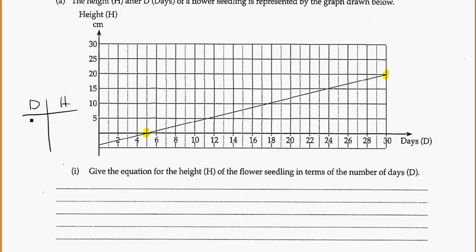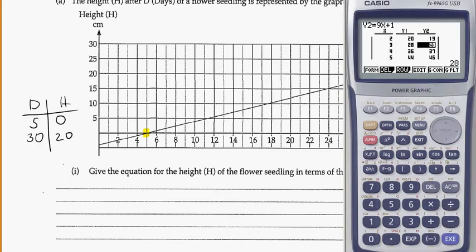So we can make ourselves a little table. We've got days and height using the two points that we have. So, one, two, three, four, five. Five days. And what's the height? Zero. And out here we have 30 days and a height of 20. So 30 days and a height of 20. Two points. We can use our calculator.